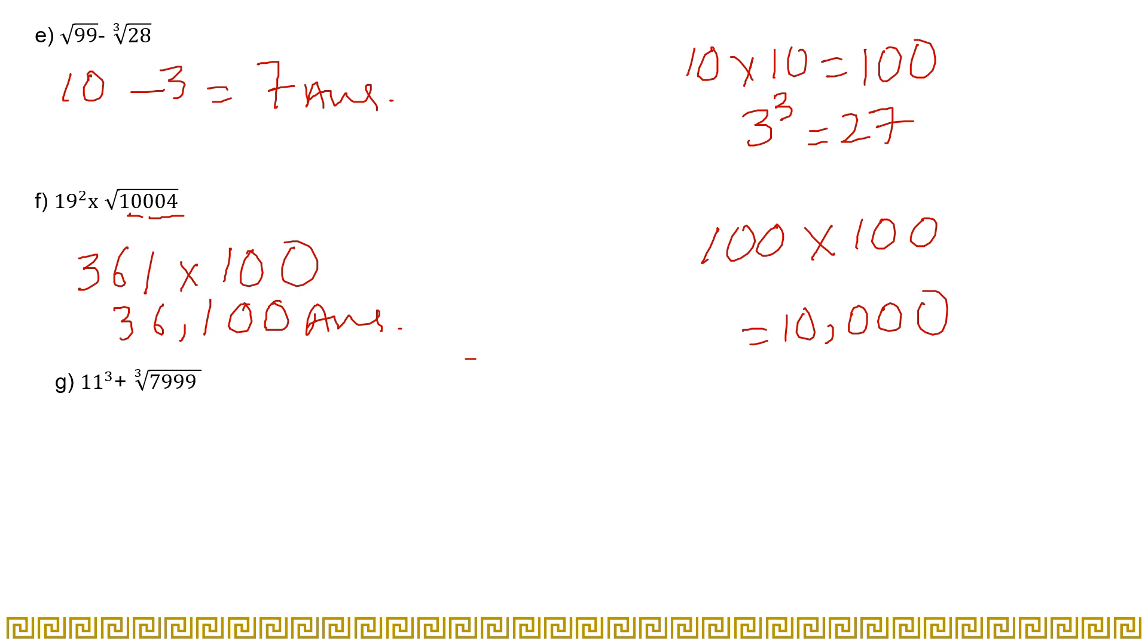Now in this case, 11 cubed: 11 multiply by 11 multiply by 11 is 1331. And you have to add it with the cube root of 7999.